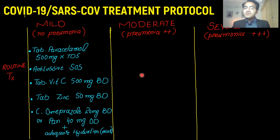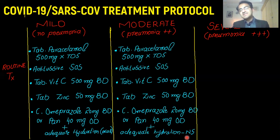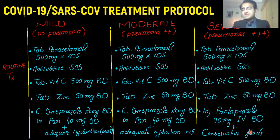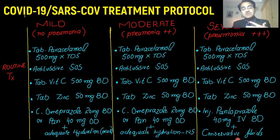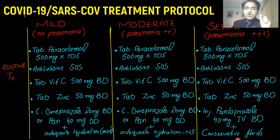For the moderate pneumonia 2+ case, the same general management applies as in the mild case, except that hydration will be done with normal saline IV fluids. The severe pneumonia patient gets the same general management, except you have to be conservative with fluids. Fluid can accumulate in already edematous lungs and result in respiratory distress. So if the patient is developing pulmonary edema, you have to stop and give fluids conservatively, only as much as the patient requires.